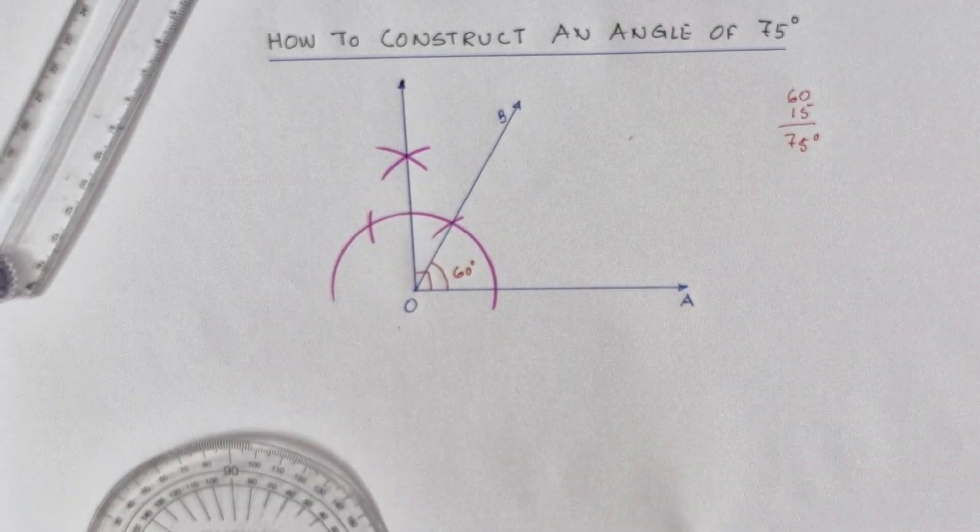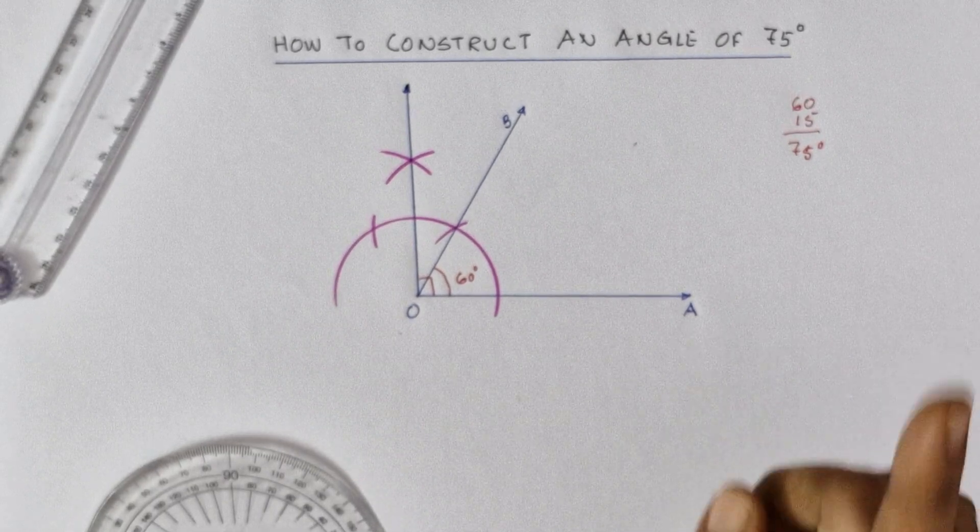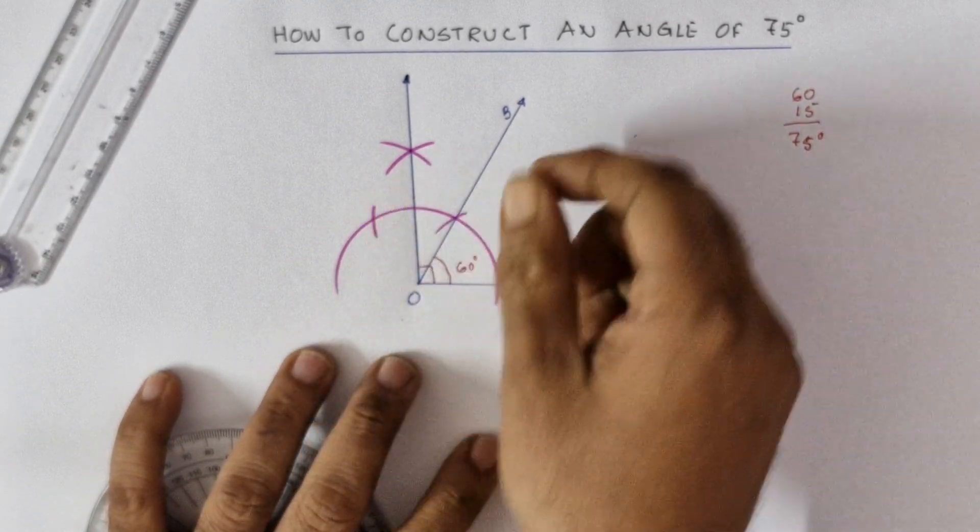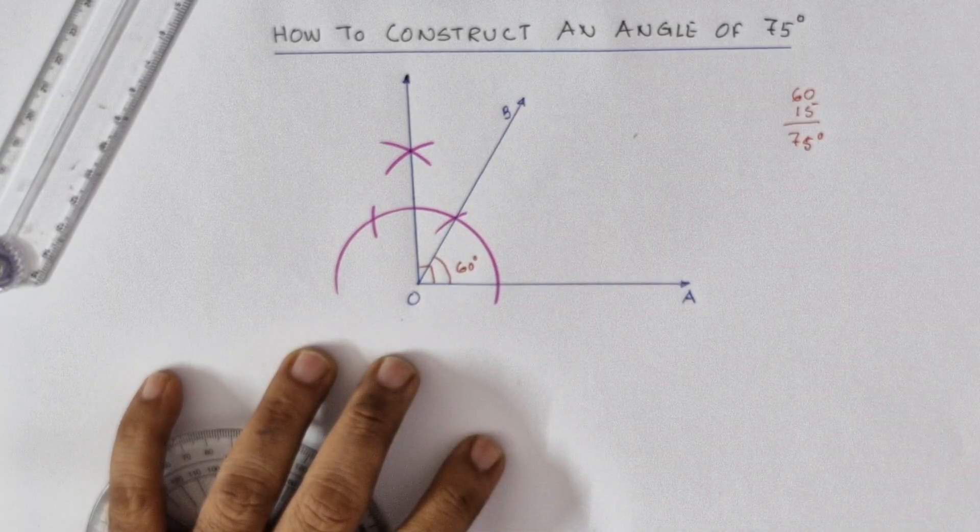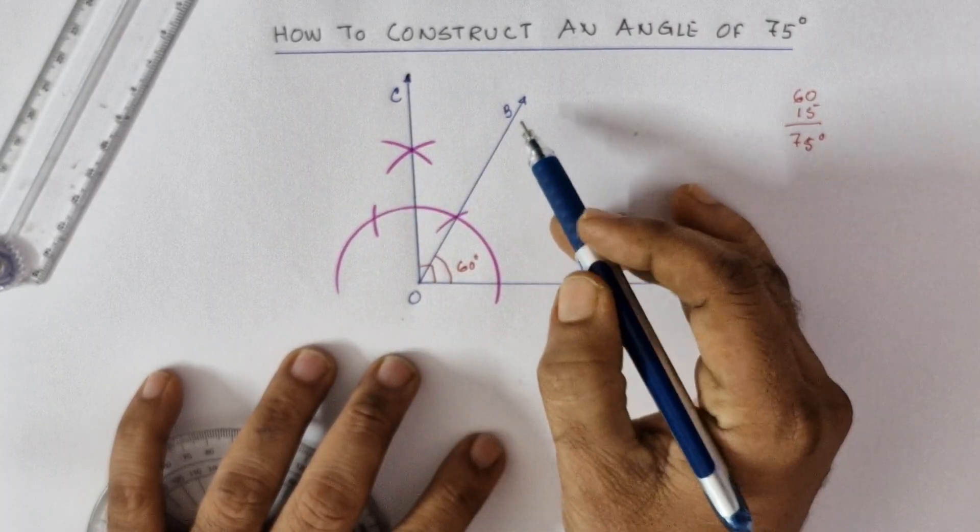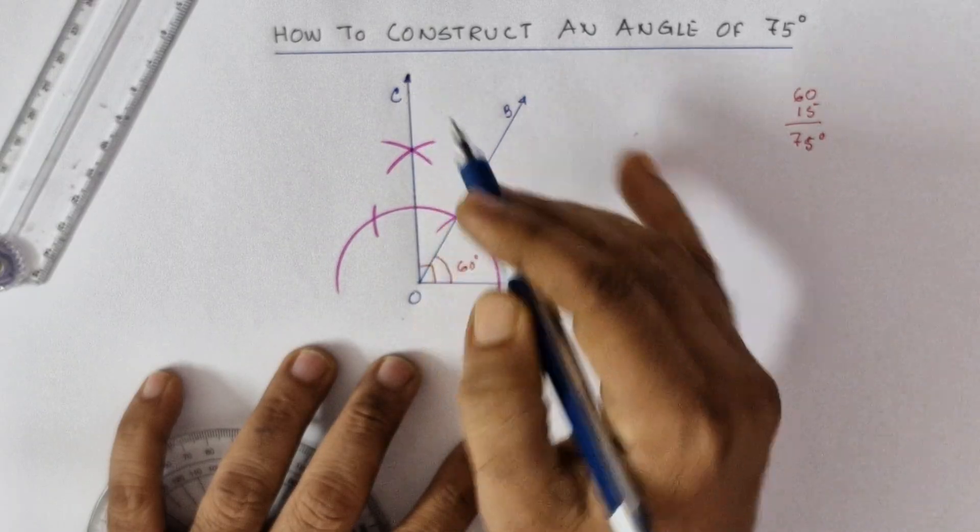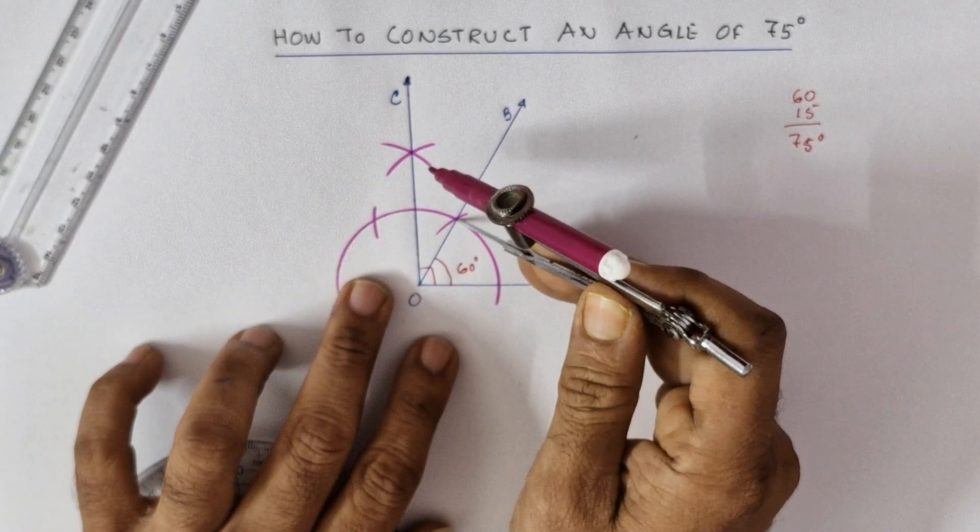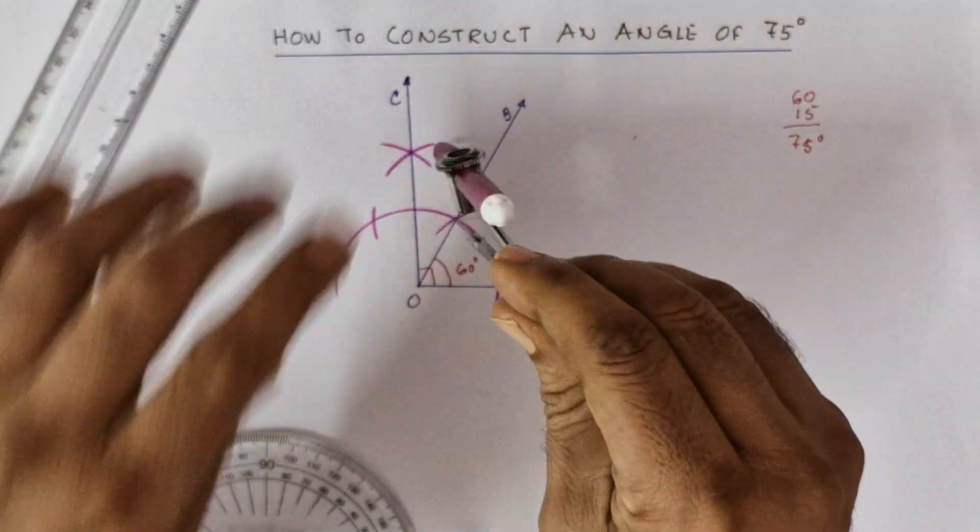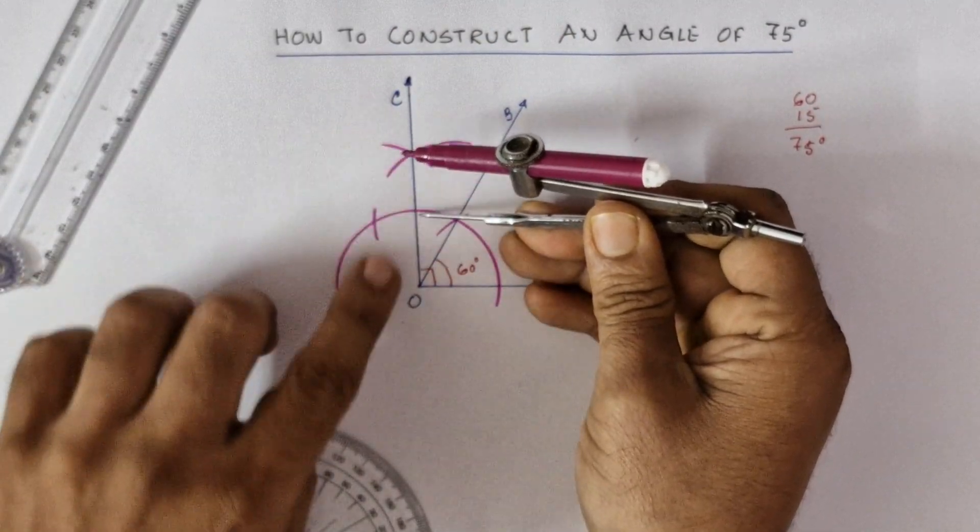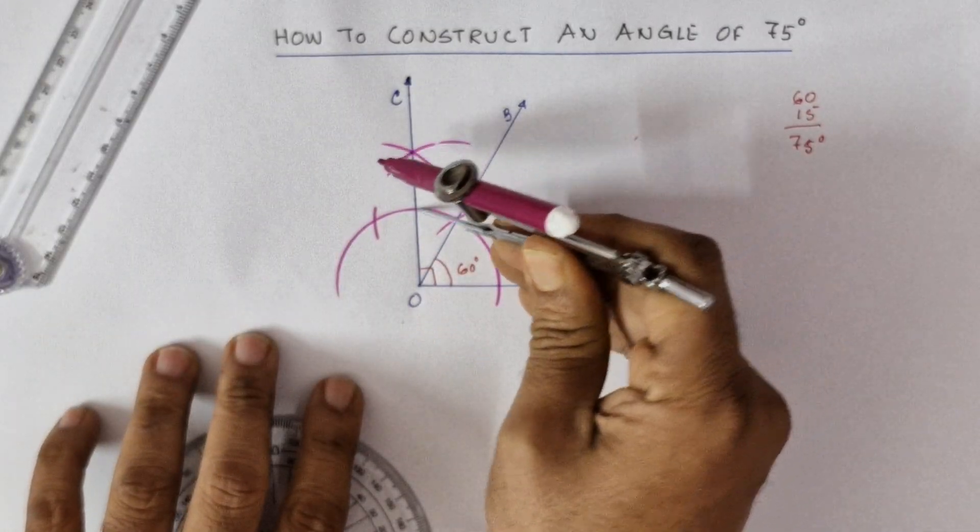The last step will be to bisect this angle. Let's name this as C, so we will be bisecting angle BOC. The very similar way: take this point and draw an arc here. Now take this point where 90 degrees intersected the main arc.